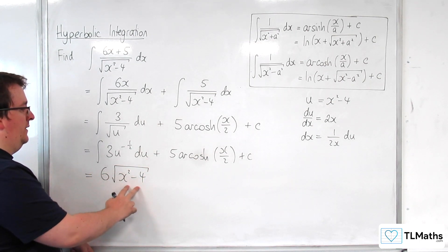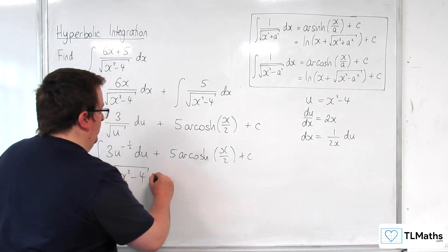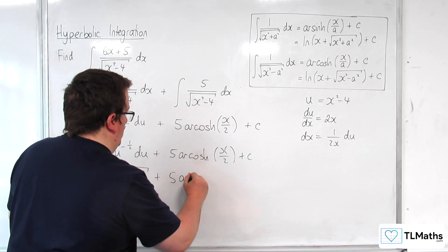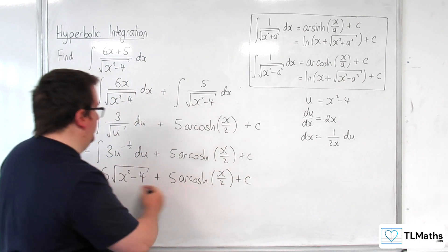Okay so that's 6u to the half here plus 5 arc cosh x over 2 plus some constant c. And so that is my integral.